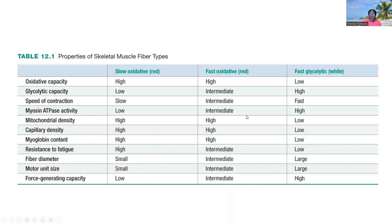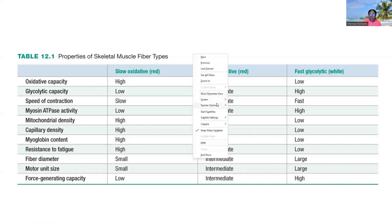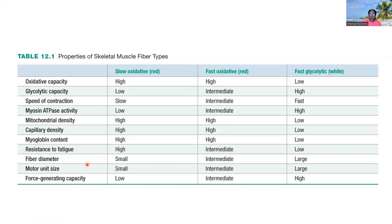Here's a nice summary table to compare the three fiber types. Think about oxidative capacity and glycolytic capacity, the speed of contraction — fast or slow — and that will connect to myoglobin content, resistance to fatigue, and force generated. This is a useful study table for comparison.